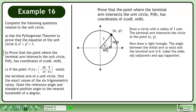Now draw a right triangle. The angle between the initial arm, the x-axis, and the terminal arm is theta. Label the sides adjacent and opposite. We need to find the adjacent side. Use cos theta equals adjacent over hypotenuse to find the adjacent side. The hypotenuse is 1 since the radius of the unit circle is 1. Cross multiply to get adjacent equals cos theta.